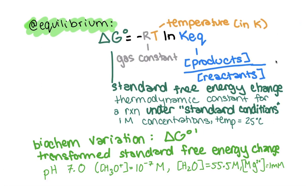This actually relates directly to our KEQ. We can think about delta G naught in terms of our KEQ. For a reaction at equilibrium, we can determine: delta G naught equals negative RT times the natural log of KEQ, where KEQ is the concentration of products over reactants. R is the gas constant, T is temperature in Kelvin, and delta G naught is our standard free energy change. The same applies to delta G naught prime under biochemistry standard conditions — just using KEQ prime.